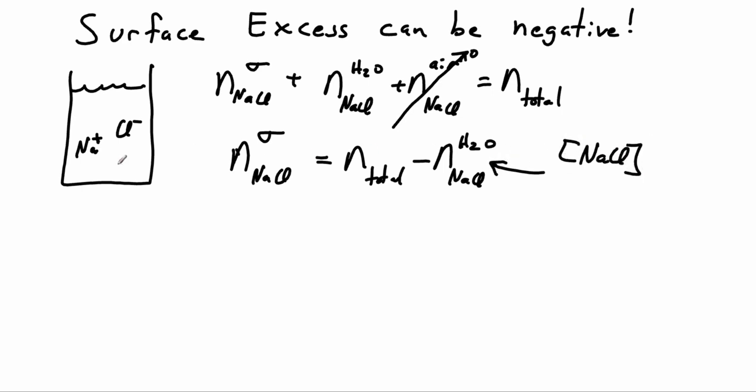And this is just concentration times volume. So we can sample some of this solution down here, get its concentration, and multiply times the volume. And we end up getting this. So we can put in a certain amount, and then we can do our chemical analysis and get what's actually dissolved down there. And what we get is that this number is bigger than this number.